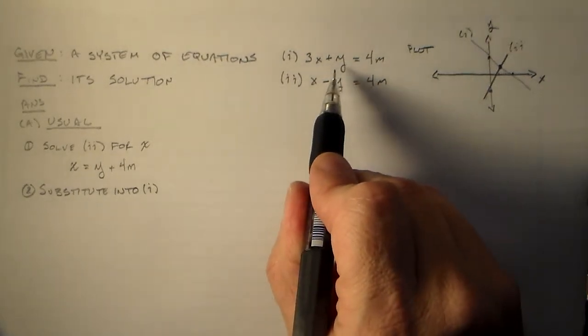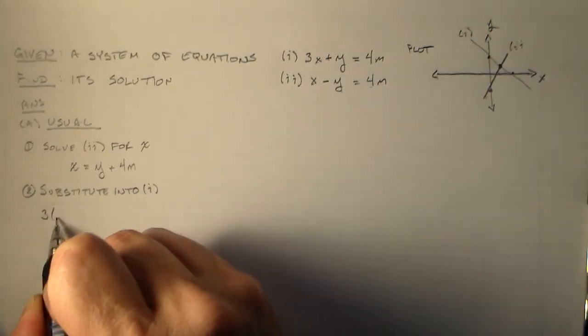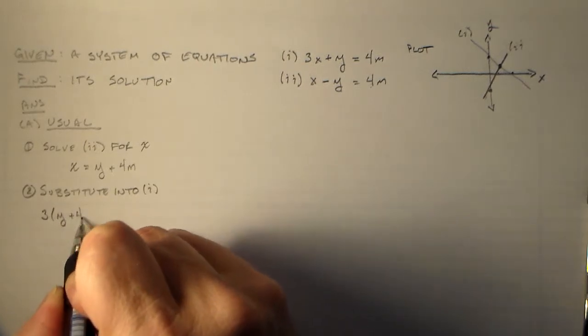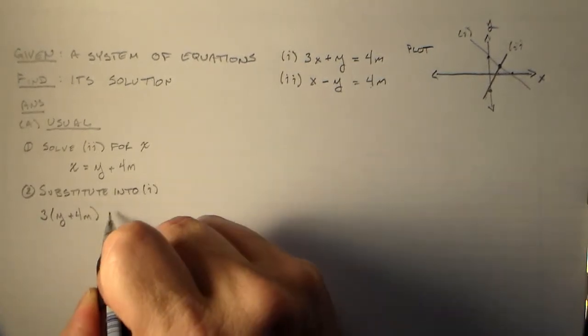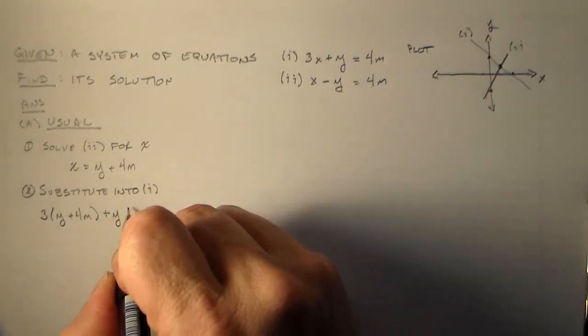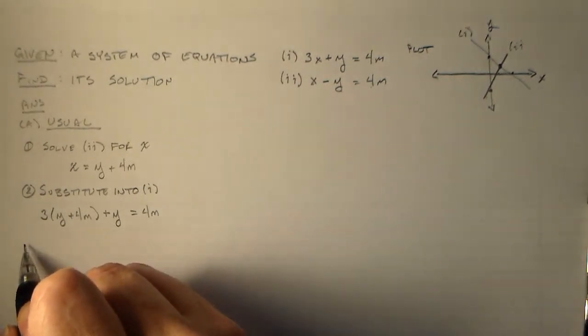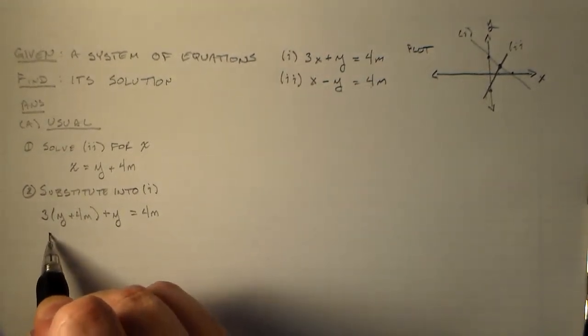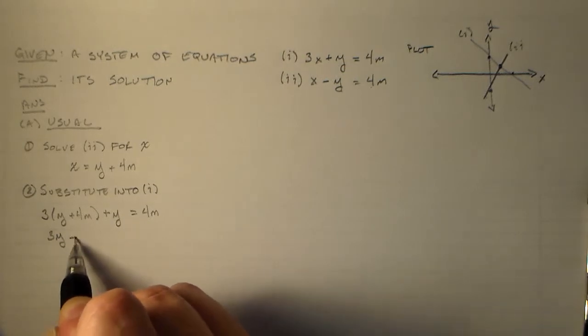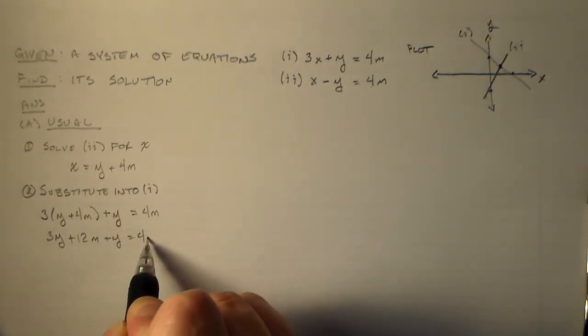When you do this, you just take 3 times whatever x is, which is y plus 4 meters, and then you add that on to whatever's next. This is the y. That's all equal to 4 meters. And now it's just math. We've got 3y plus 12 meters plus y equals 4 meters.